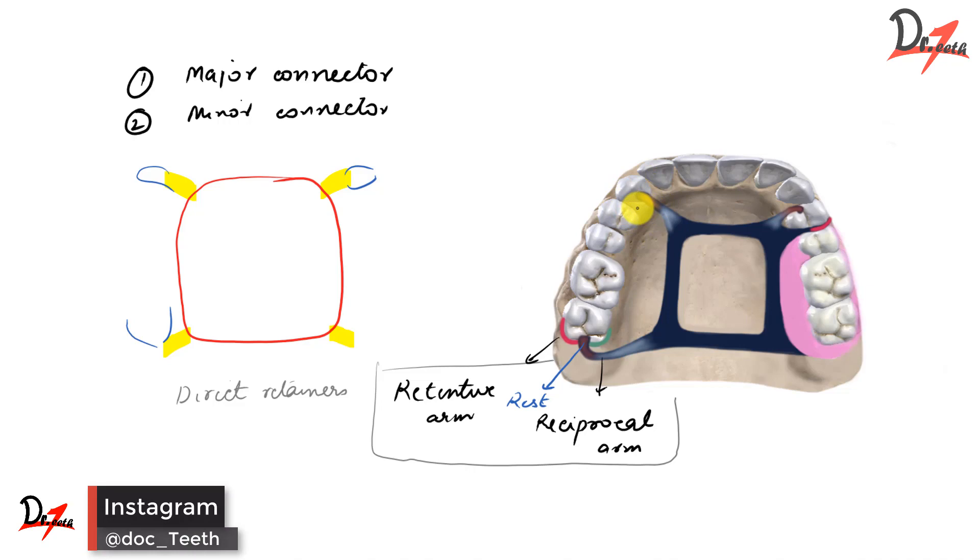And then lastly, we have this in pink, which is the denture base. So let me just quickly trace it here, denture base. And then we have the artificial teeth. So these are the components of the cast removable partial denture.